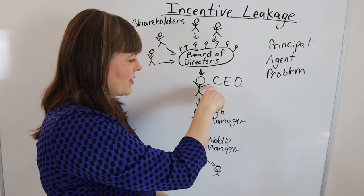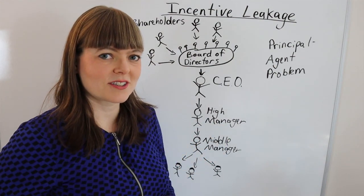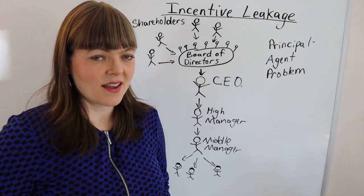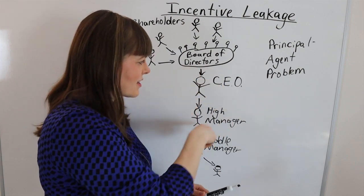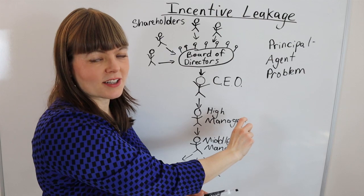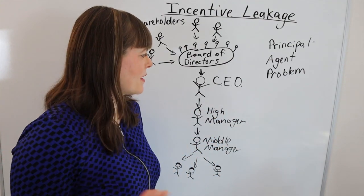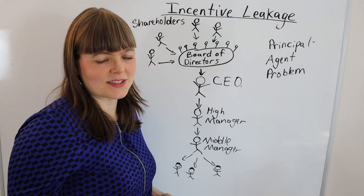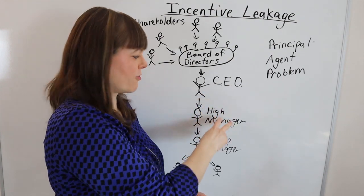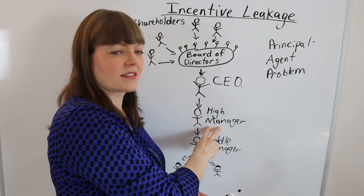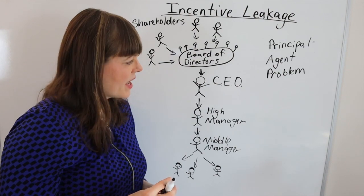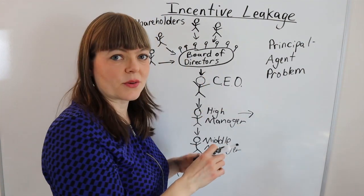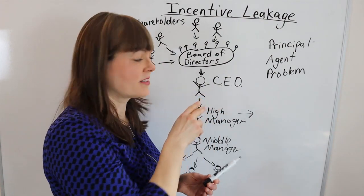We could go all the way down the line between the CEO and high managers, high managers and middle managers, and do the same exercise. Economists can model every single one of these principal-agent problems by asking: what are the incentives of the manager, what is the complete list of things that motivate them, what tools does the CEO have for incentivizing, and how well do those tools work? That's essentially what economists do — we ask what's the tool set for incentivizing, what does the agent care about, and how much leakage is there.